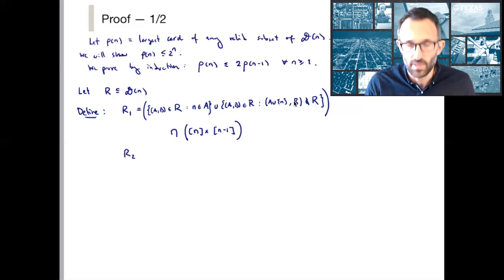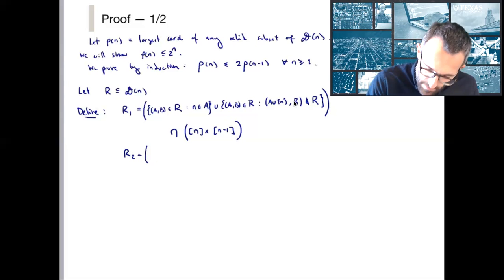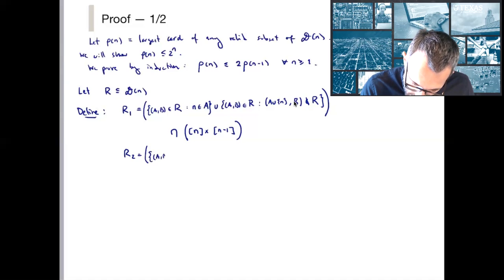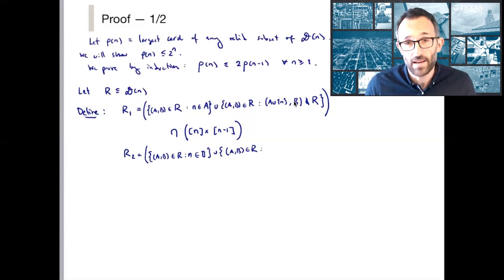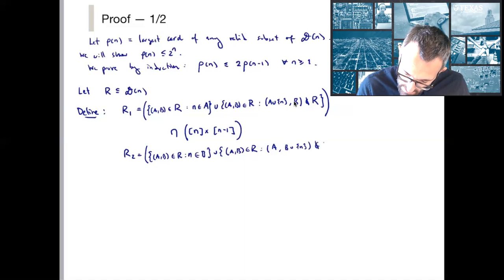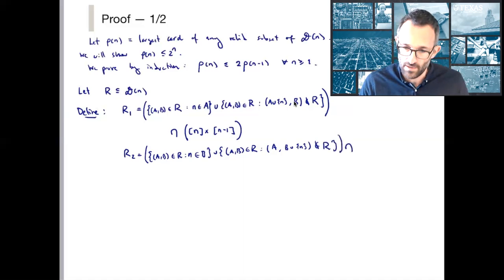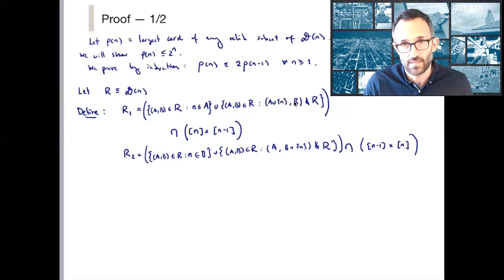R2 is essentially the mirror of R1, flipping the roles of a and b. So R2 is the union of: all pairs (a, b) in r such that n is an element of b; and all pairs (a, b) in r such that adding n to b means (a, b∪{n}) is no longer in r. Intersected with the corresponding set where a does not contain element n.